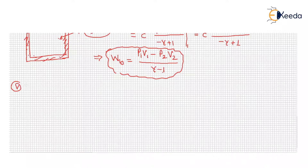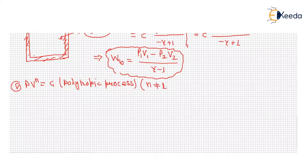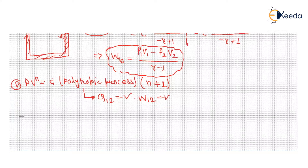The fifth process is the polytropic process, defined as PV^n equals constant. Where N is not equal to 1, because when N equals 1 it automatically converts into an isothermal process. In a polytropic process there is both heat transfer and work transfer. But in the case of an adiabatic process, only work transfer takes place — there is no chance of heat transfer.